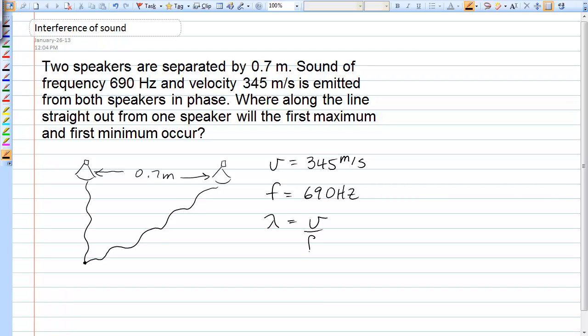wave equation V equals lambda F or lambda equals V over F. And so we get a nice convenient wavelength of 0.5 meters.